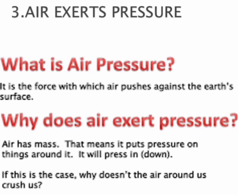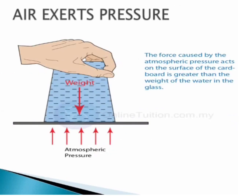The third property of air: air exerts pressure. Let me explain the term atmosphere. The earth is surrounded by a layer of air called the atmosphere. The gravity of the earth pulls the atmosphere downwards, and thus the air pushes downwards on everything. The weight of the air acting on a surface causes air pressure.